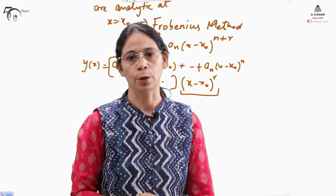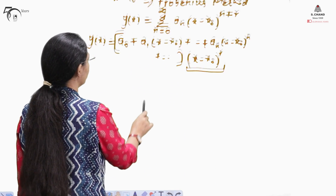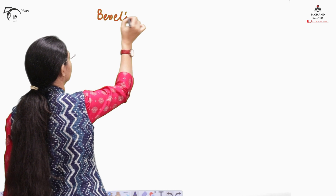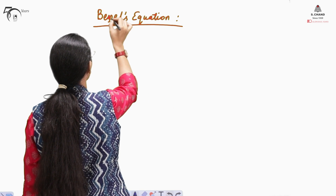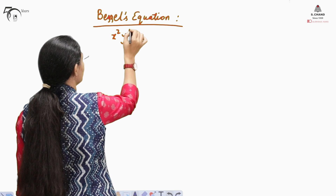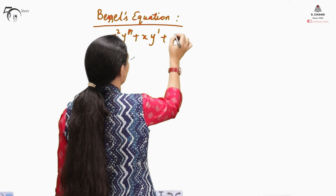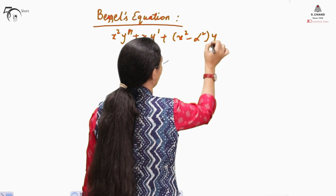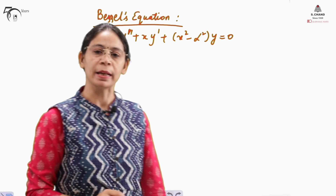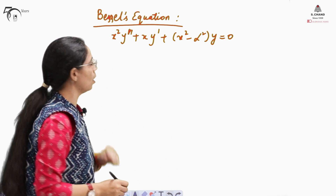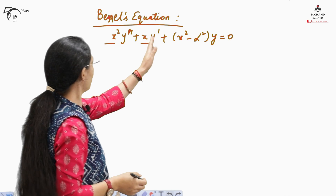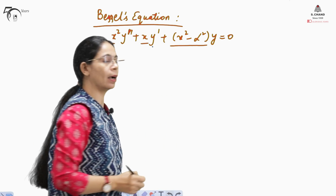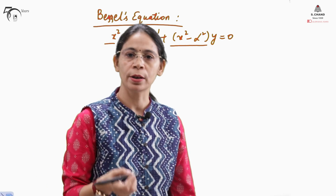Such a situation arises in Bessel's equation. The Bessel's equation is: x² y'' + x y' + (x² − α²) y = 0. This equation is a second-order differential equation with variable coefficients. The coefficient of y'' is x², the coefficient of y' is x, and the remaining term involves (x² − α²), where alpha determines the order of the Bessel's function.